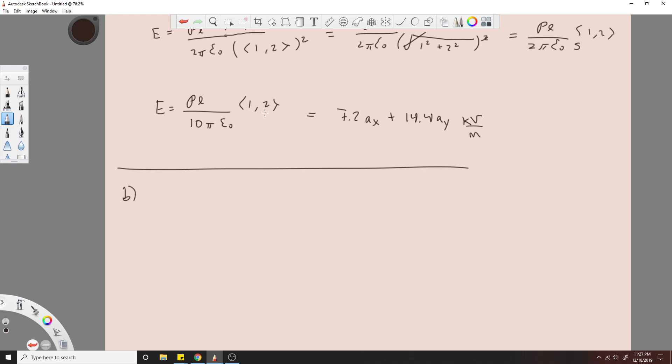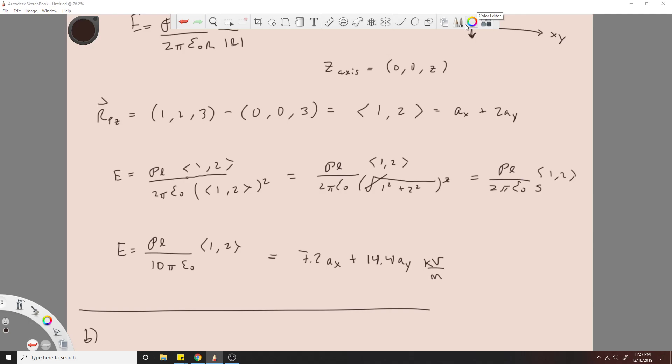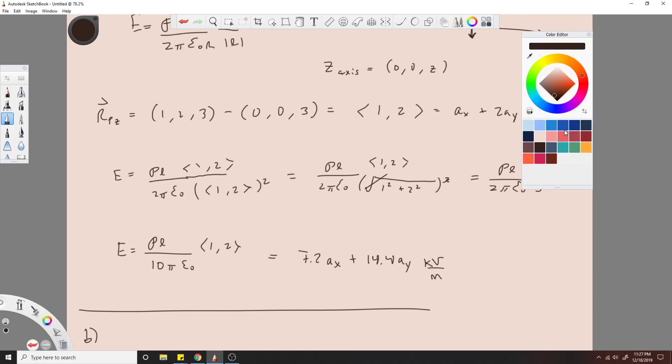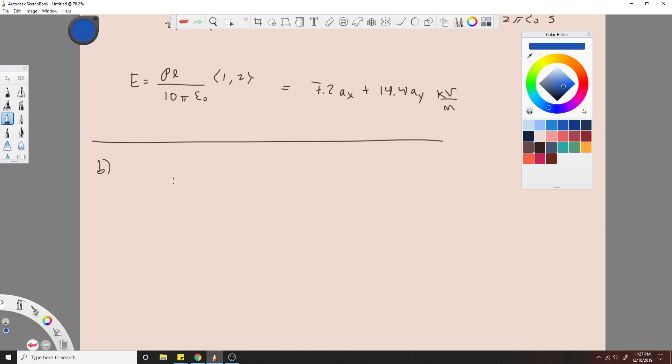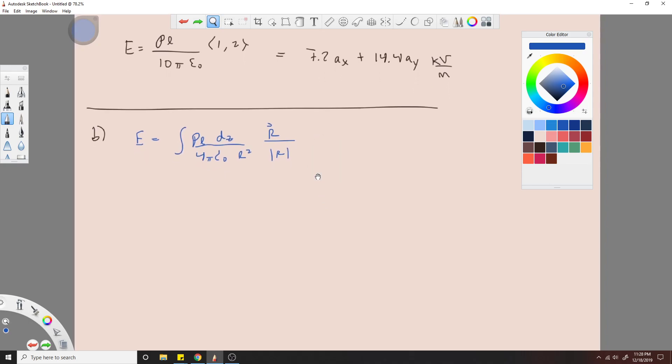So for B, we can't make the assumption that it's infinite, so it makes it a little bit harder. So now we have to use the full integral equation, which would look like this: integral of rho L dz over 4 pi epsilon naught, then we have R squared times the unit vector again. So R over R.